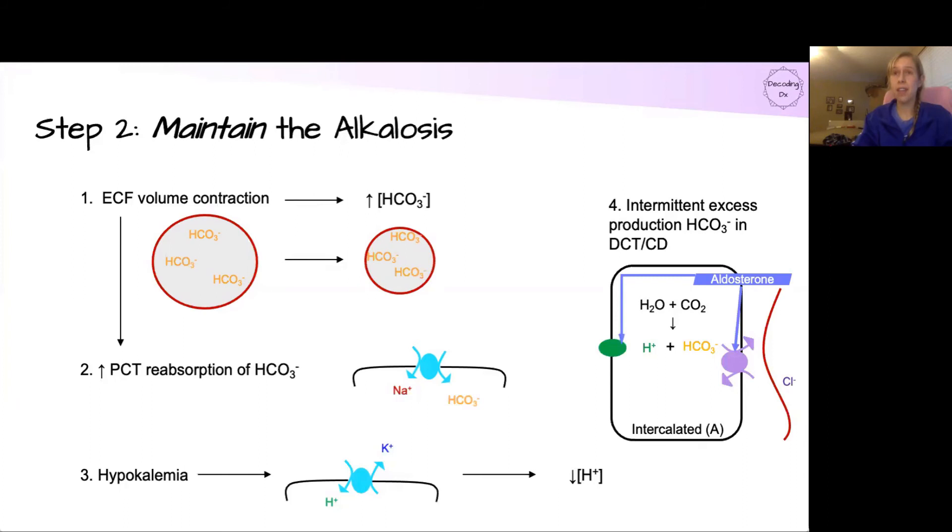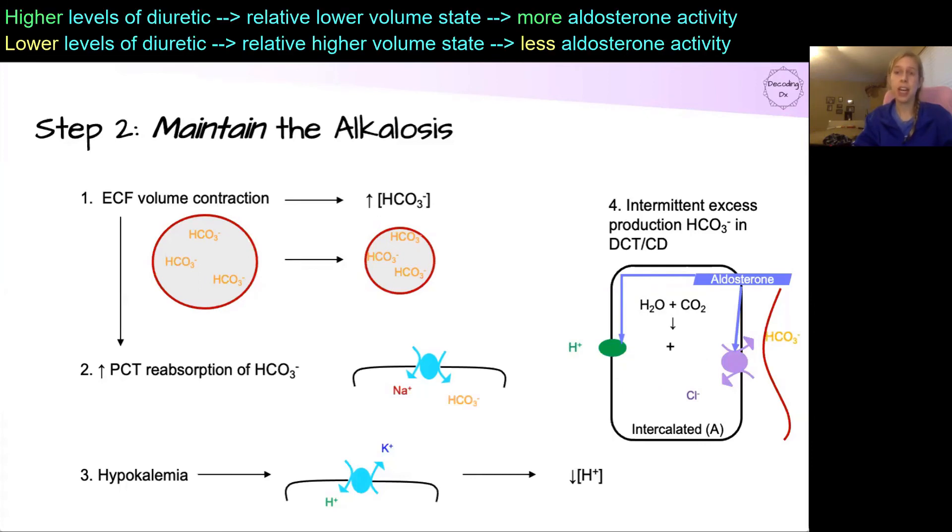We're also going to have the intermittent excess production of bicarb in the distal convoluted tubule and collecting duct. We know that the presence of aldosterone in the distal nephron will produce this effect, and the aldosterone will be triggered on an intermittent basis because of the diuretics. The diuretics will reach a certain peak state where they'll have maximum effect, and then their concentrations will decrease, and that might increase again if the patient takes another dose. So we'll have this intermittent up and down effect of the aldosterone.